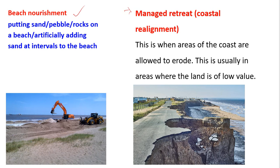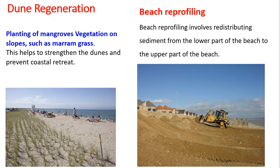Managed retreat, also known as coastal realignment, is when an area of the coast is allowed to erode — they don't prevent it, they just allow it to happen. This is usually in areas where the land is of low value, so spending resources to protect it is not justified. It is considered more sustainable.